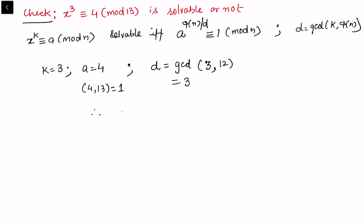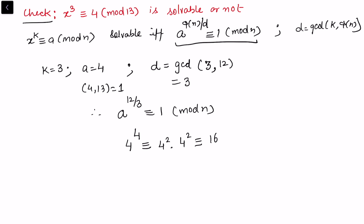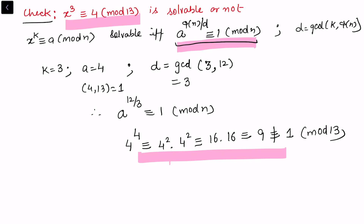So we need a^(φ(n)/d) = 4^(12/3) = 4^4 ≡ 1 (mod 13). Computing: 4² = 16, and 4^4 = 16 × 16 = 256. Now 256 is congruent to 9 (mod 13), which is not congruent to 1 (mod 13). Since this condition is not satisfied, the nonlinear congruence x³ ≡ 4 (mod 13) is not solvable.